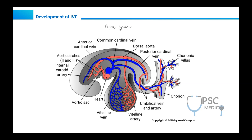From an embryological perspective, I'll give you the basics about the venous system. At about the fifth week of embryonic development, there are three pairs of major veins formed in the embryo. They are: cardinal vein, vitelline vein, and the very important umbilical vein. So these are three pairs of veins.